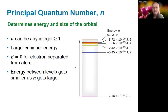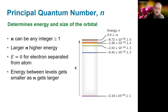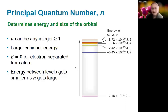The principal quantum number n is an integer greater than or equal to one, and it determines the size and energy of the orbital — the particular solution to the Schrödinger equation. A larger n corresponds to a higher energy. Since the energy is negative, higher energy means a less negative value. We define energy equal to zero when there is no interaction between an electron and the nucleus. The energy spacing between levels gets smaller as energy increases, due to the 1 over n squared dependence.